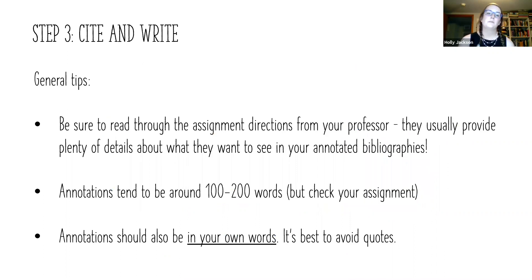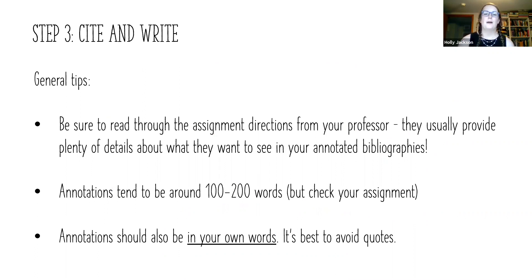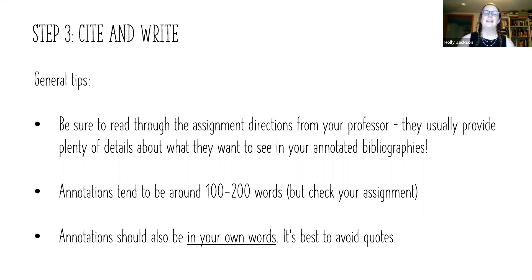Some general tips: be sure to read through the assignment directions from your professor — going back and looking at them can answer a lot of questions, and they usually provide plenty of details about what they want in your annotated bibliographies. Annotations tend to be about 100 to 200 words, but check your assignment, as sometimes professors want more or less. Annotations should be in your own words, and it's best to avoid using quotes.